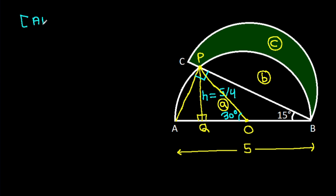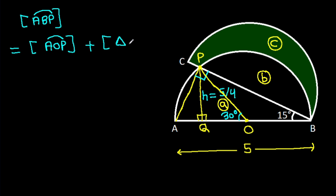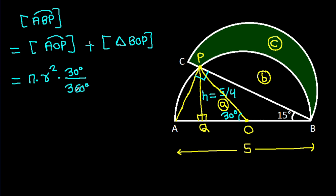Area of triangle ABP equals area of sector AOP plus area of triangle BOP. Area of sector AOP equals π·r²·(30/360). Area of triangle BOP equals one-half times base BO times height PQ.